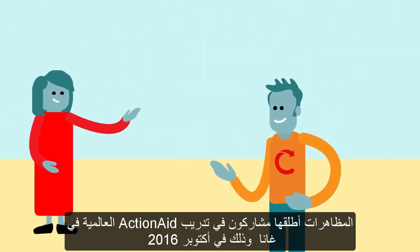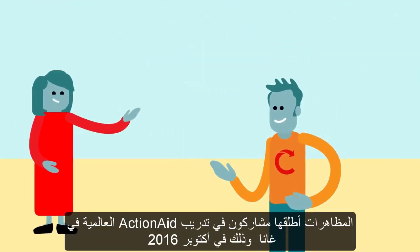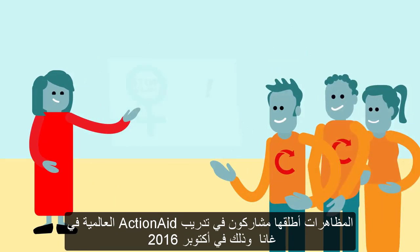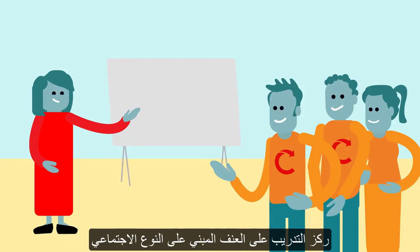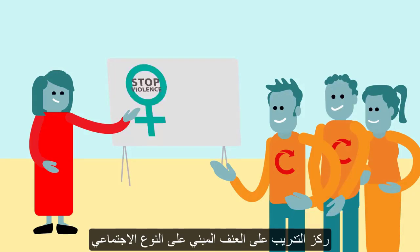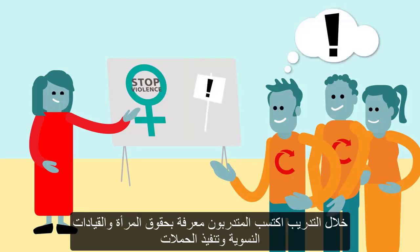The demonstrations were initiated by participants from a training at the ActionAid Denmark Global Platform in Ghana in October 2016. The training focused on gender-based violence and linked to a broader campaign in Ghana. During the training, young people developed knowledge of women's rights, feminist leadership and campaigning.